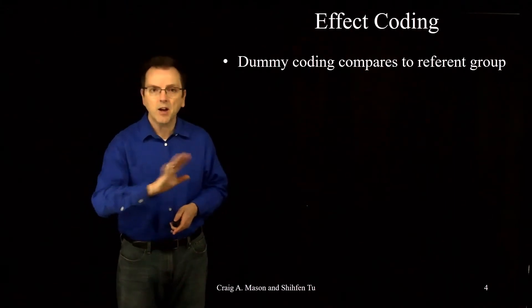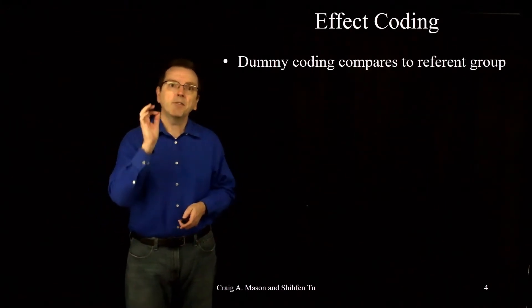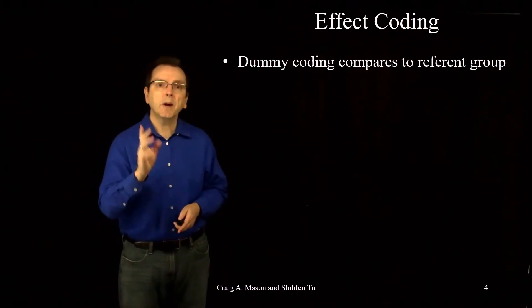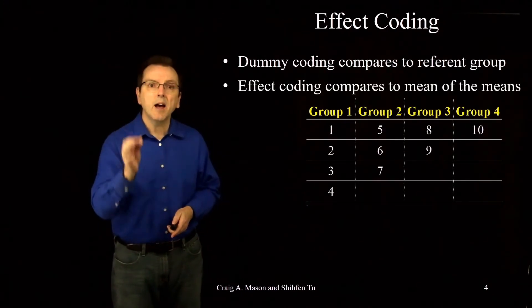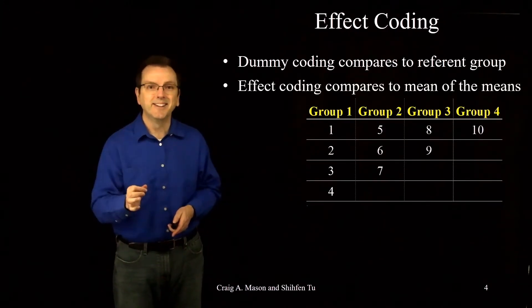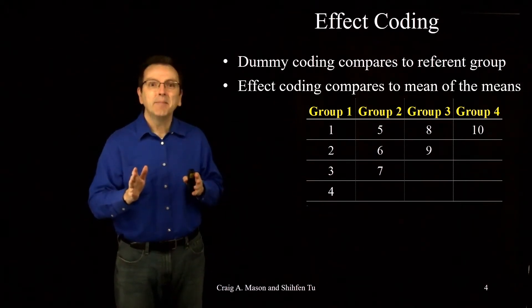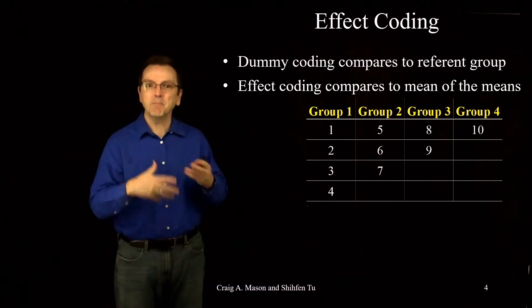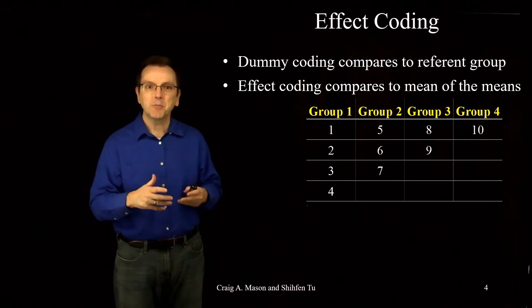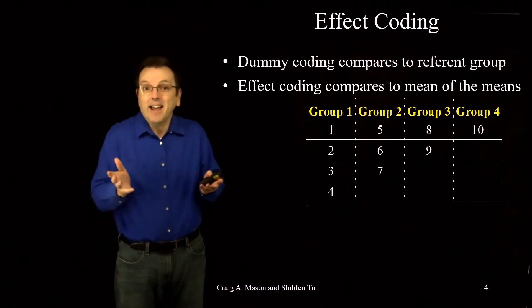In contrast to dummy coding, effect coding compares everybody to the mean of the group means. That sounds a little wordy, but I'm going to use that more cumbersome language because that's what it is.